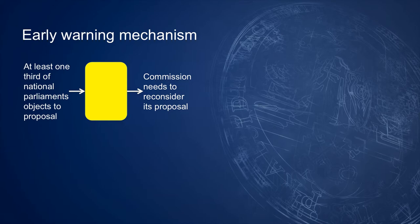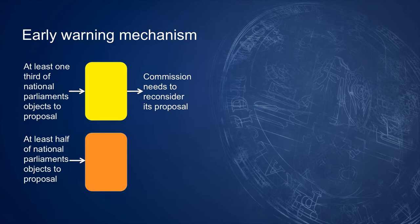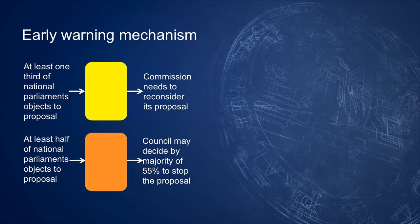When at least one-third of the chambers of national parliaments object to a proposal, the Commission has to reconsider its proposal. Next to this yellow card, an orange card exists. When at least 50 per cent of the national parliaments make an objection, the Council may decide by a majority of 55 per cent of its members to stop the proposal.